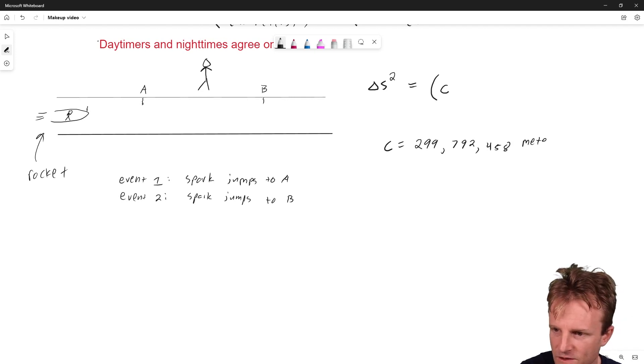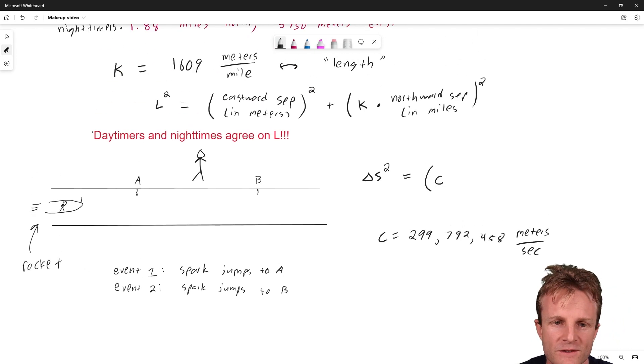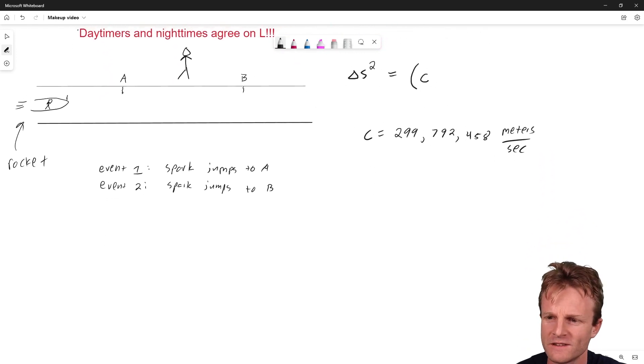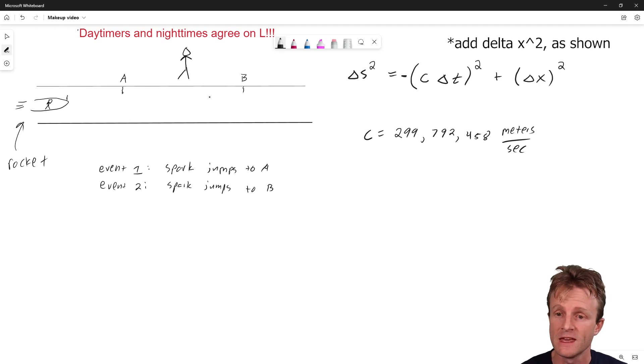299,792,458 meters per second compared to 1609 meters per mile. This is 299,792,458 meters per second. And we multiply that by the difference in time between two events. In this case, the spark jumping. We square it. We put a minus sign out front. And we multiply it by the spatial distance delta X. And the claim is that the person in the hallway and the person on the rocket will set up different coordinate systems with different notions of time, call it T prime, different notions of space, call it X prime. They'll disagree on the time elapsed. They'll disagree on the spatial separation. But they will agree on this space time interval. That's an assertion. That's a fundamental property of special relativity really of our space time that we live in.